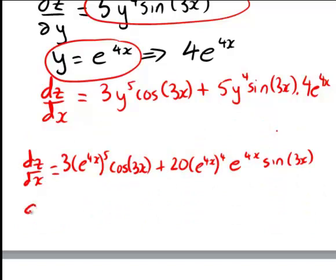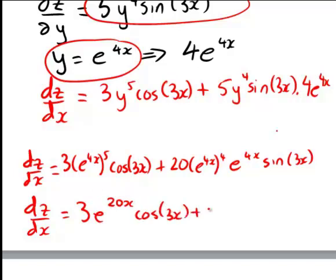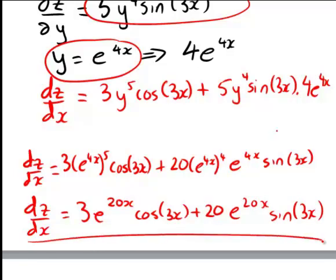Finally, we can tidy that up using our index laws to get 3e to the 20x times cos 3x, plus 20 times e to the 4x to the 4, which is e to the 16x, times e to the 4x, which gives e to the 20x, multiplied by sine 3x. So that would be our answer if we were to express that as a function of x.